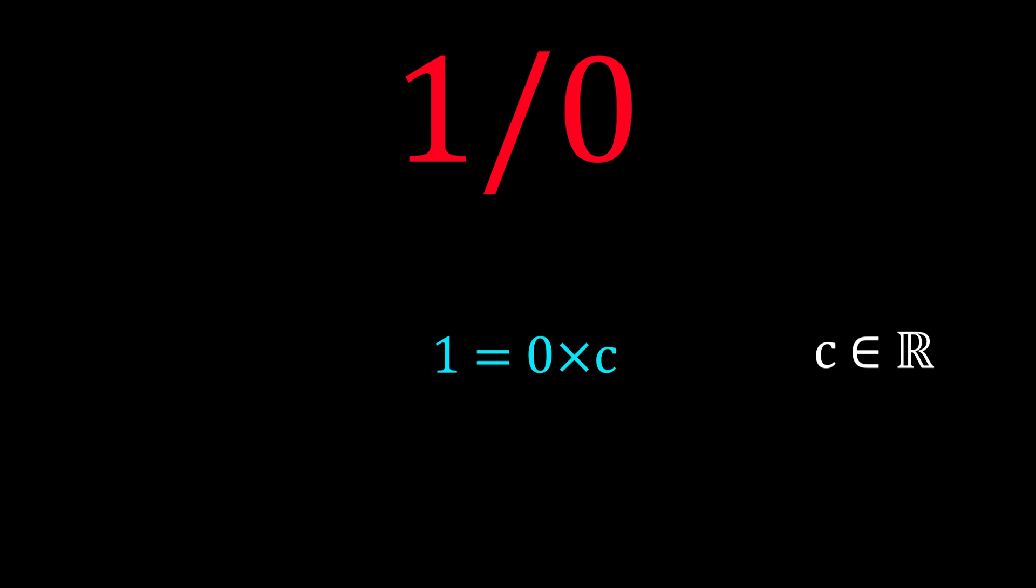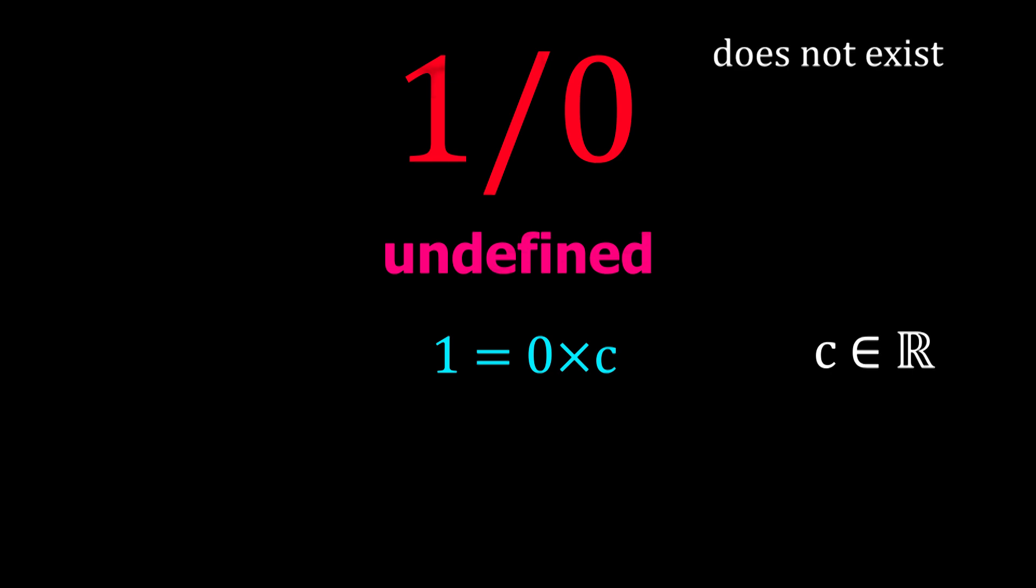But this is absurd. Every real number multiplied by 0 is 0. So this is not true. We say 1 divided by 0 is undefined. That is to say, 1 divided by 0 does not exist. On the other hand,